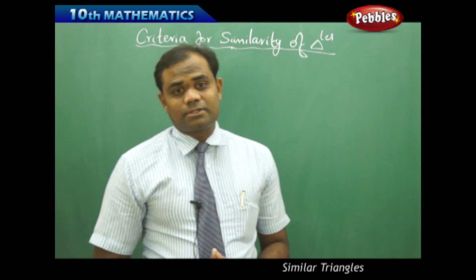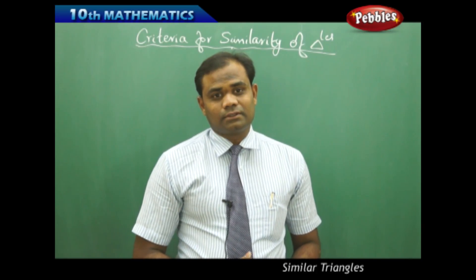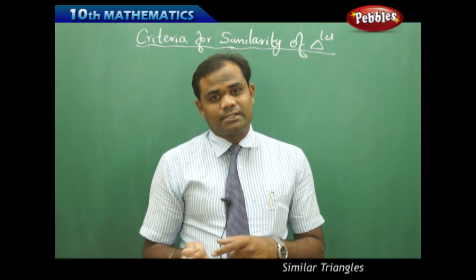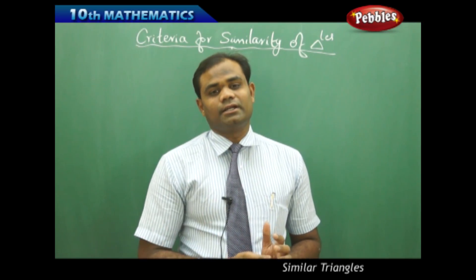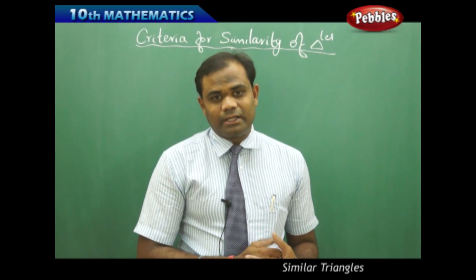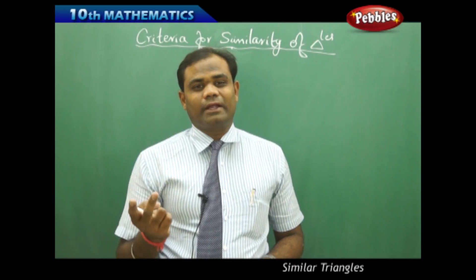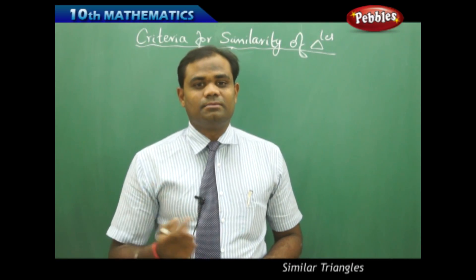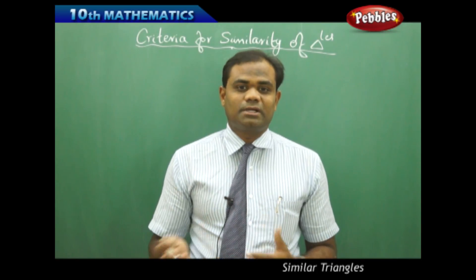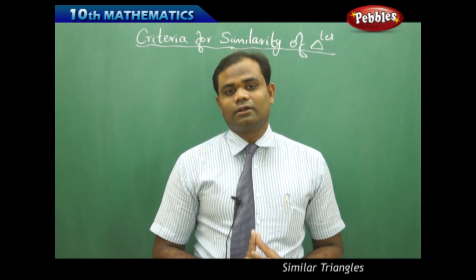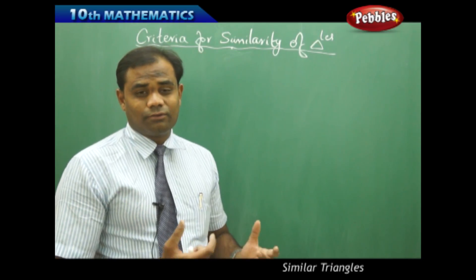We have three types of criteria for similarity of triangles. When three angles are equal, their corresponding sides are in the same ratio. Similarly, when all sides are equal, the corresponding angles are also equal. Ultimately, all three criteria lead to the two important factors: corresponding angles must be equal and corresponding sides must be in the same ratio.